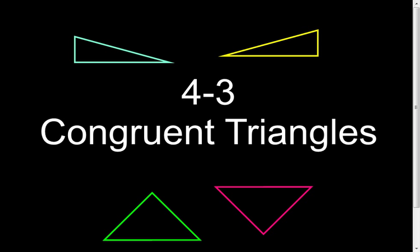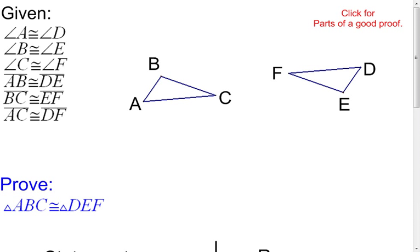In this portion of our congruent triangles lesson, I'm going to look at two proofs. We're going to prove that triangles are congruent. In this first example, notice I have a bunch of given information, what we're trying to prove, and a picture. When we write a proof, I want us to think back to the parts of a good proof.